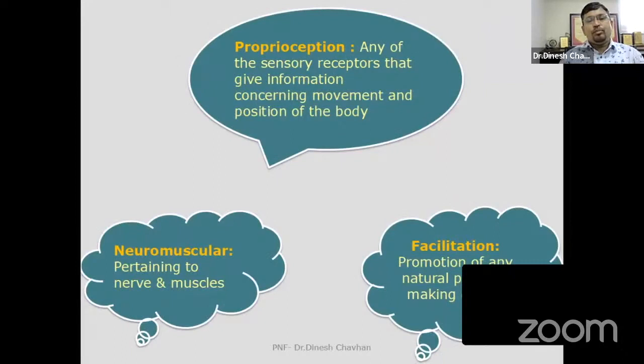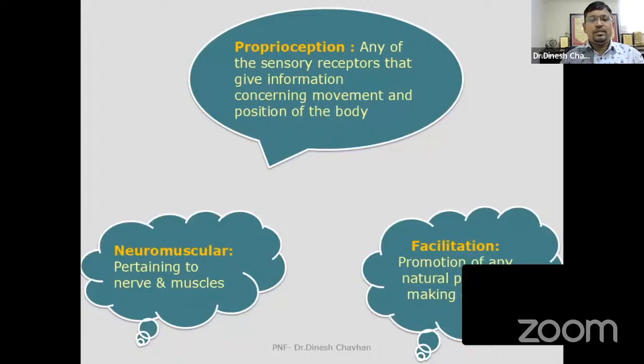We will see what is the definition of PNF. Proprioceptivity means any of the sensory receptors that gives information concerning the movement and position of the body. Neuromuscular pertains to the nerve and muscle. Facilitation means promotion of any natural process, or making things easier or faster, so that it helps recovery faster. Neuromuscular facilitation — that is the definition of PNF.